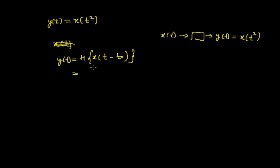We already know that the system squares the time t. So I will get the output as x(t² - t₀). So this is what I get the output y(t) - it is x(t² - t₀), it is squaring the time t. So this is the first half.